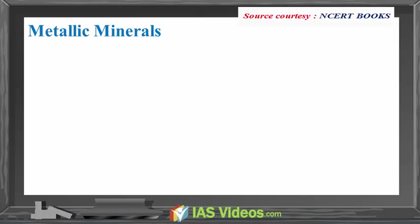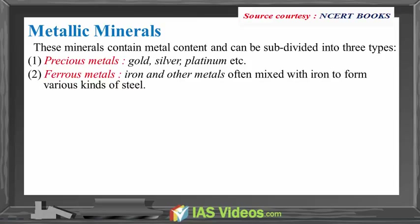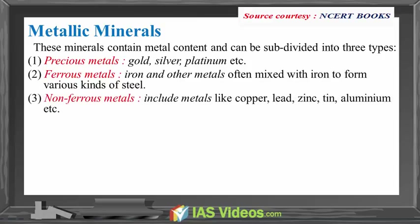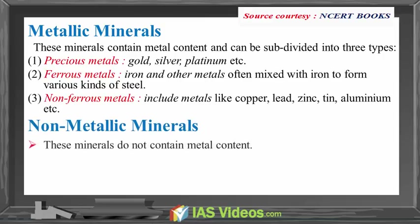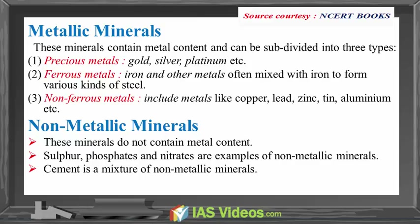Metallic minerals: these minerals contain metal content and can be subdivided into three types. Precious metals: gold, silver, platinum, etc. Ferrous metals: iron and other metals often mixed with iron to form various kinds of steel. Non-ferrous metals: include metals like copper, lead, zinc, tin, aluminum, etc. Non-metallic minerals: these minerals do not contain metal content. Sulfur, phosphates and nitrates are examples of non-metallic minerals. Cement is a mixture of non-metallic minerals.